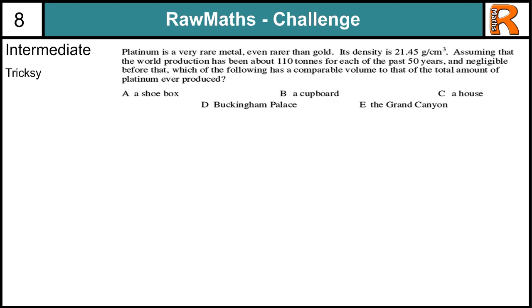Intermediate Tricksy from Raw Maths Challenge number 7. If you haven't had a go at this question yet, pause the video and give it a try now. Okay, so we are dealing with an approximation question. We don't have to be exact, so try not to worry too much about the details. So if we're looking at this value here, so we're going 21.45, we're going to just use 20 grams per cm³. Instead of 110, we're just going to use 100, and everything else is quite nice anyway.